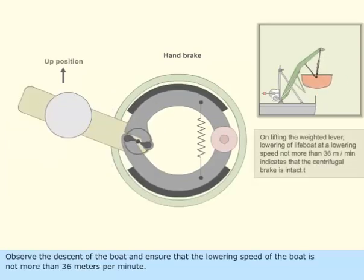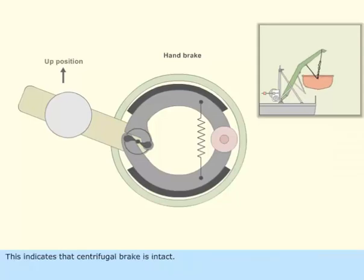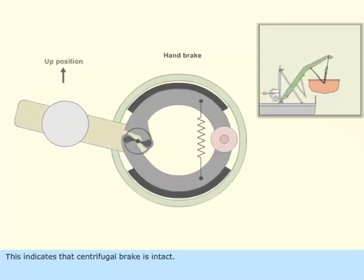Observe the descent of the boat and ensure that the lowering speed of the boat is not more than 36 meters per minute. This indicates that centrifugal brake is intact.